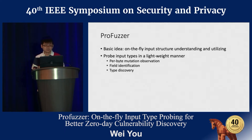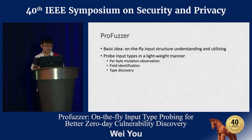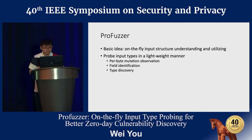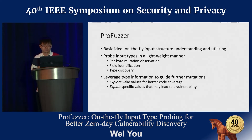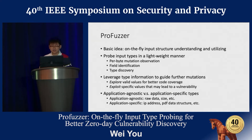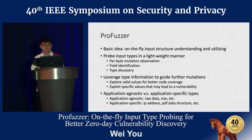In the first stage, the types of input fields are probed in a lightweight manner consisting of three steps: probe mutation observation, field identification, and type discovery. In the second stage, the type information is leveraged to explore valid values for better code coverage and exploit specific values that may lead to vulnerabilities. The types discussed here are application-agnostic types such as raw data and size, which are critically important for fuzzing, rather than application-specific types like IP addresses or PDF data structures.